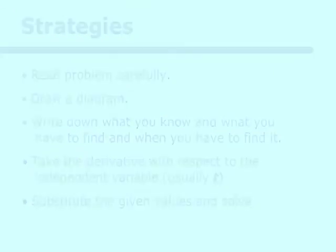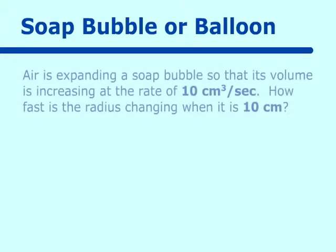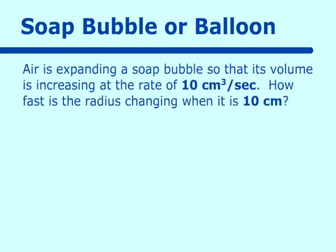Our first problem is the soap bubble or balloon problem. Air is expanding a soap bubble so the volume is increasing at the rate of 10 centimeters cubed per second. How fast is the radius changing when it is 10 centimeters? That means the radius is 10 centimeters in this particular problem.